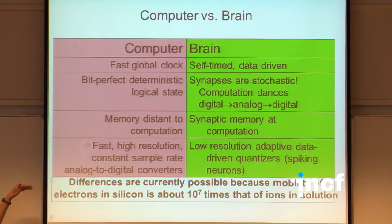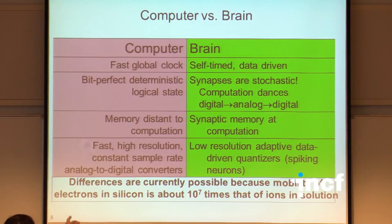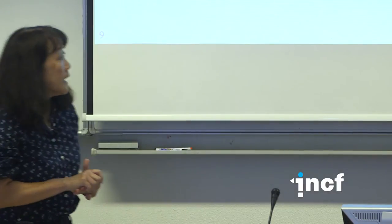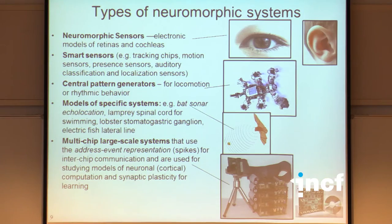How can computers run so much faster than the brain? Because the mobility of electrons in silicon is about 10^7 times that of ions in solution, which is why you can run processors much faster than the processes in the nervous system. There are now various neuromorphic systems that have been built.